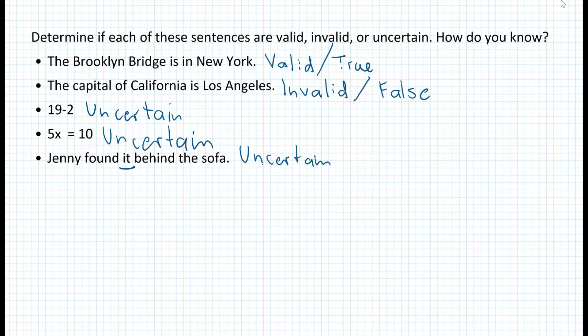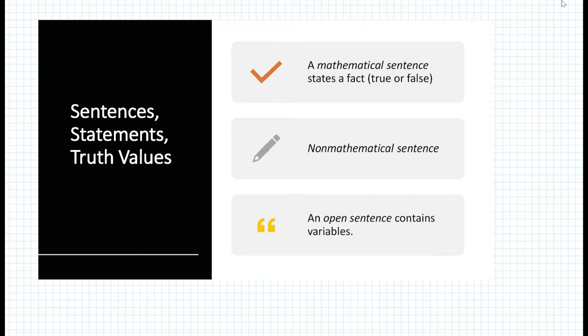This example introduces us to three types of statements in mathematics, specifically in logic. Number one, mathematical sentences — you just state a fact, and the fact is either true or false, or valid or invalid. The second type is a non-mathematical sentence — you cannot really determine if something is true or false; it's uncertain and doesn't have any clear meaning. And finally, the third is an open sentence, which usually contains variables such as x or 'it'.